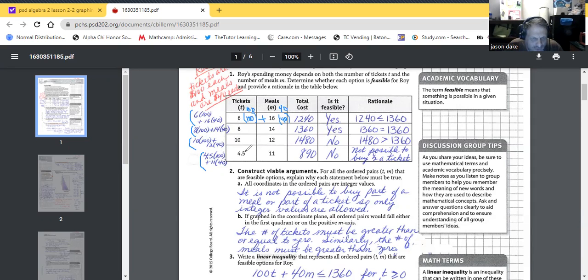So let's look at, oh, right away we already know we don't do decimals. We don't do partials. You can't buy a partial ticket, right, or a partial meal. 4.5 times 100 plus 11 times 40 equals $890. No, it's not feasible, not possible to buy a half a ticket. I'm sorry, whole meals but a half a ticket.